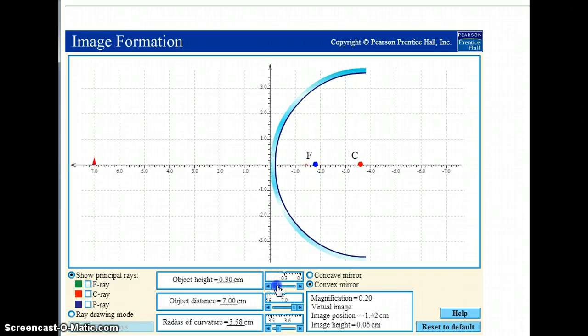So let's see, what I do, I can change the object height, so I'm going to bump it up to the maximum height, and the radius of curvature, you can mess around with that, but let's leave it like this, because that seems as good as anything. And here is my object distance.